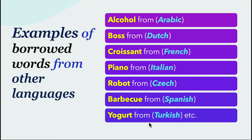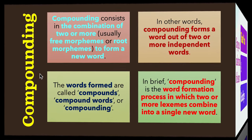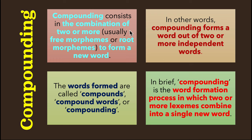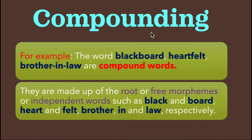Compounding consists of the combination of two or more usually free morphemes or root morphemes to form a new word. In other words, compounding forms a word out of two or more independent words; the words formed are called compound words. In brief, compounding is the word formation process in which two or more lexemes combine into a single new word.